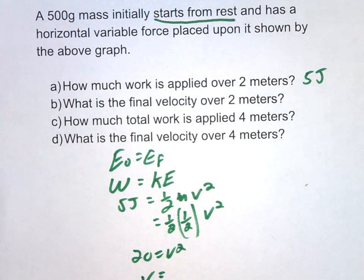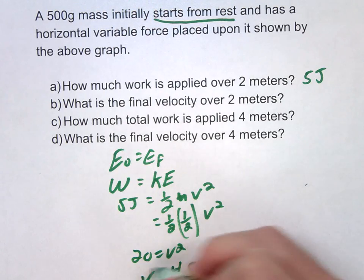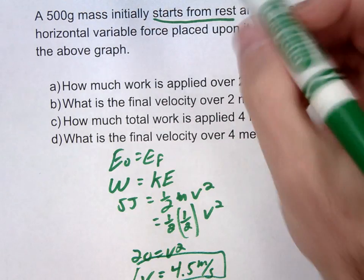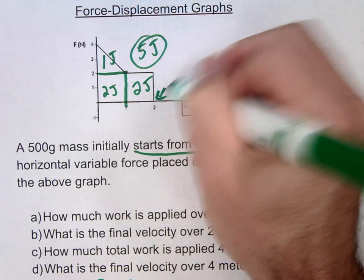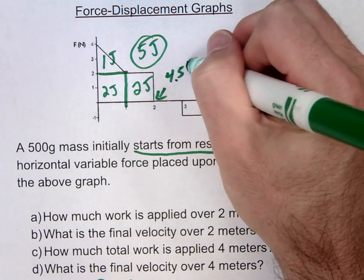Or V equals, let's go plug this in, square root 20 gives me about 4.5. And that would be my speed. At this point right here, we're going to be moving at about 4.5 meters per second.